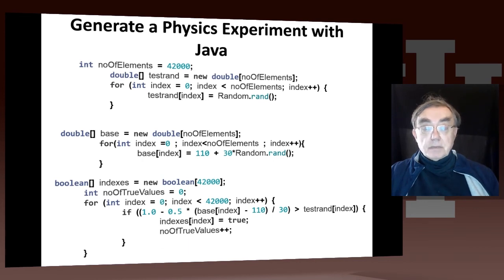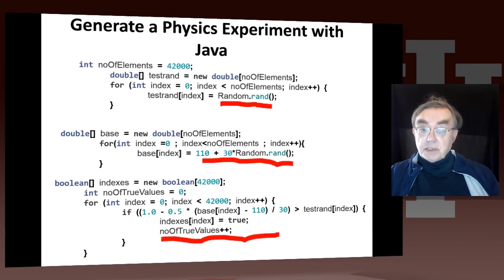Here we have the same thing in Java. And you can see, as I pointed out, it's decidedly more voluminous. This doing the same thing. Here's the random number generator. Here's this base here. And here we do the equivalent of accept-reject, which was done in a very cunning, obscure single line in Python.